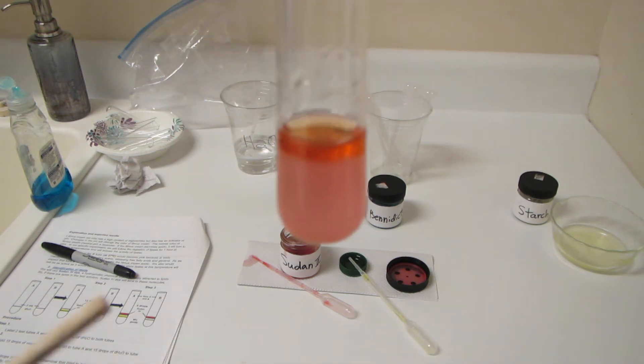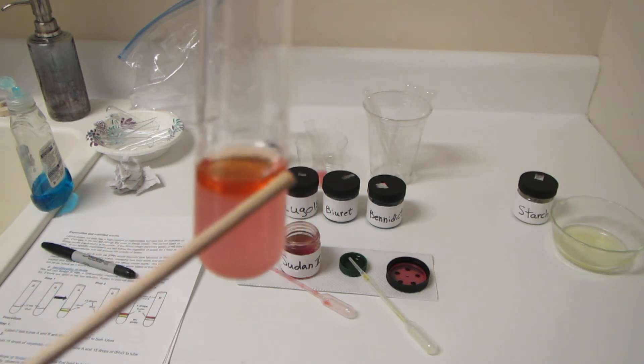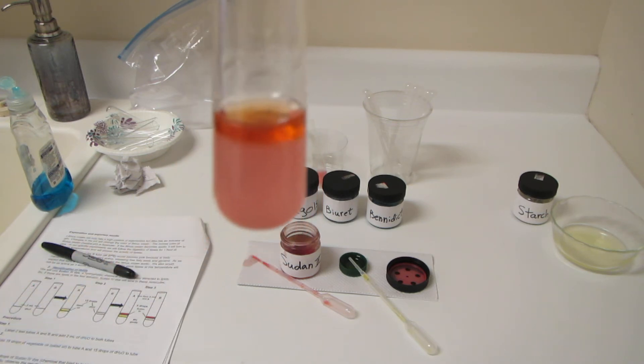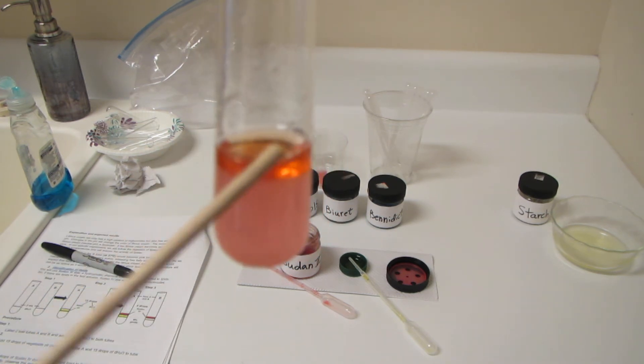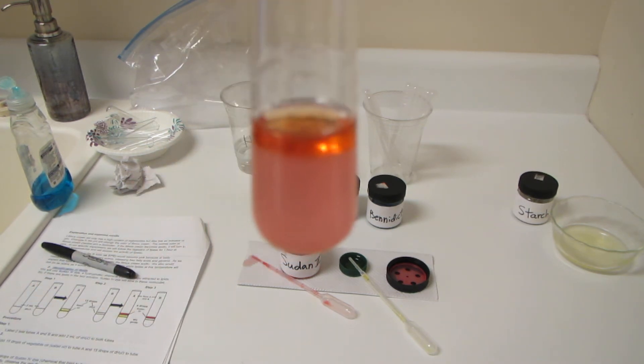Sudan 4, that beautiful magenta dye, is what we call a fat or lipid loving dye. Look what's going on, it's preferentially going up into the lipid, the fat layer up here.